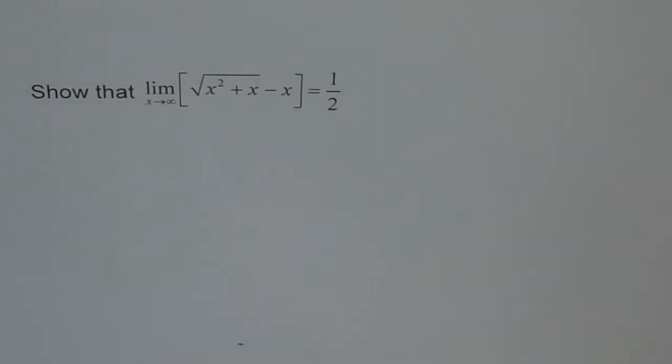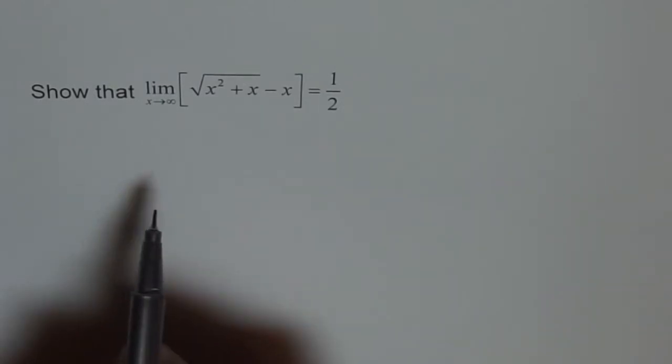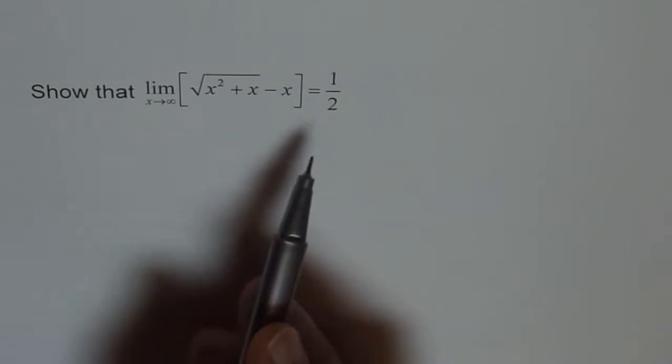Because it is a radical function, we should do rationalization of the numerator, and that is going to help us get the right answer. That is the most critical step, and sometimes students get really lost and don't know how to start. So let me do the rationalization and show you how to get this answer.